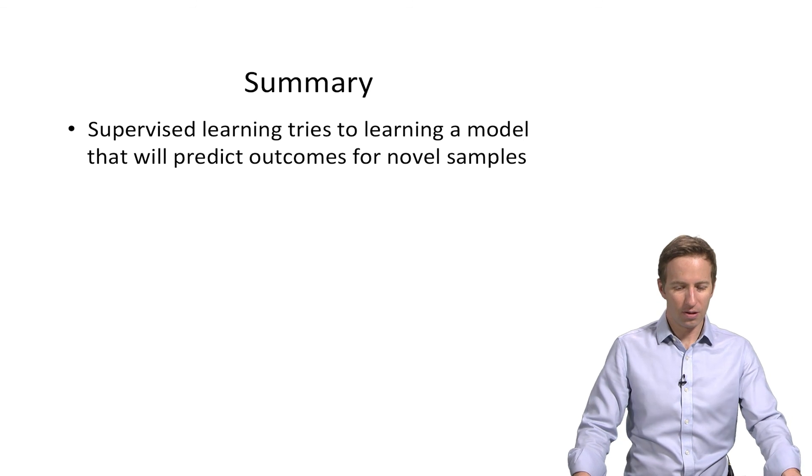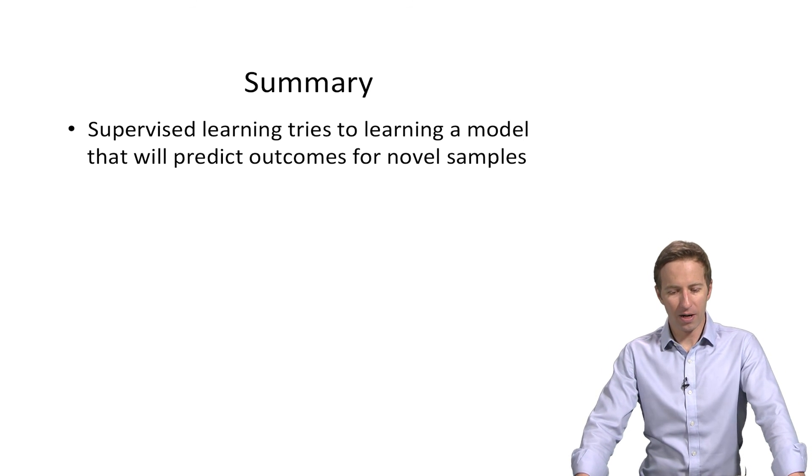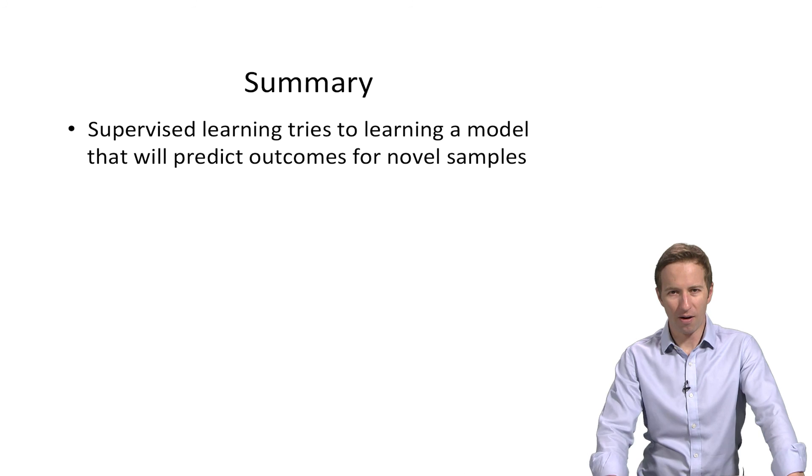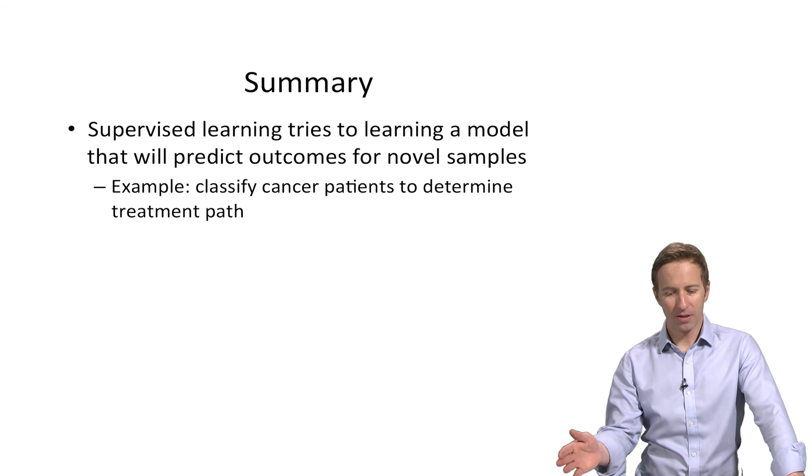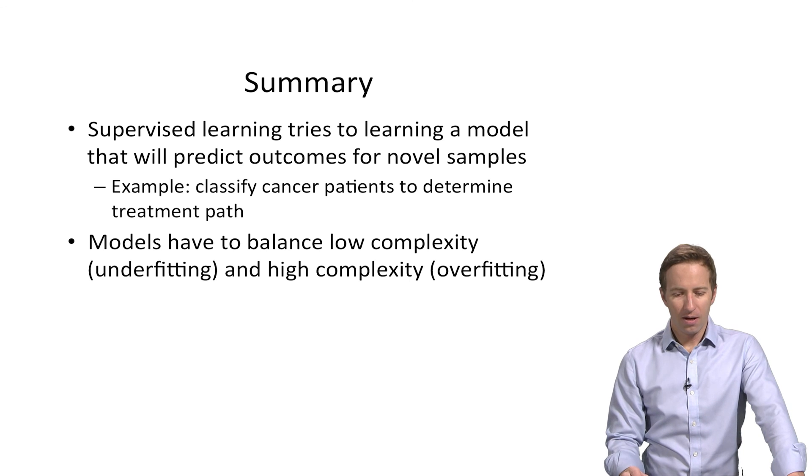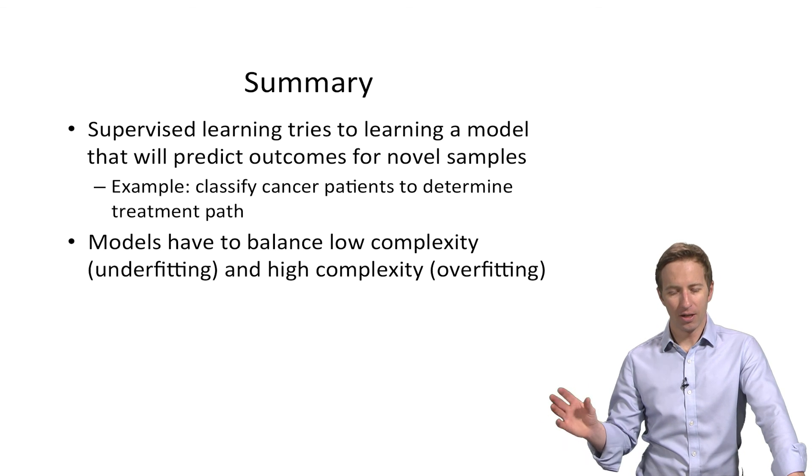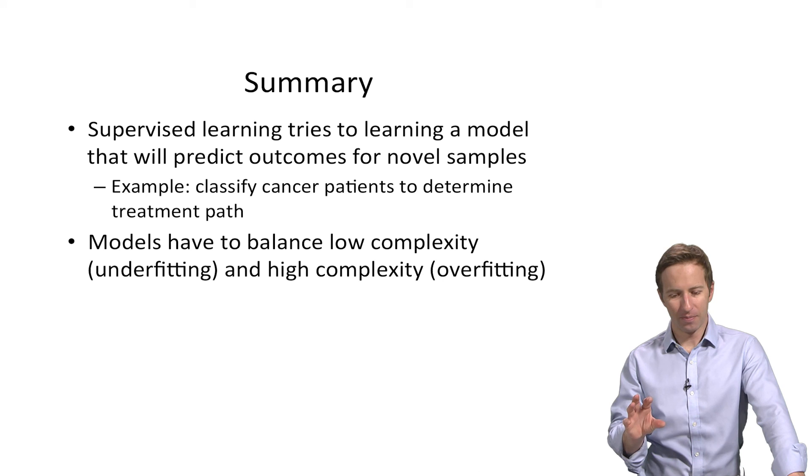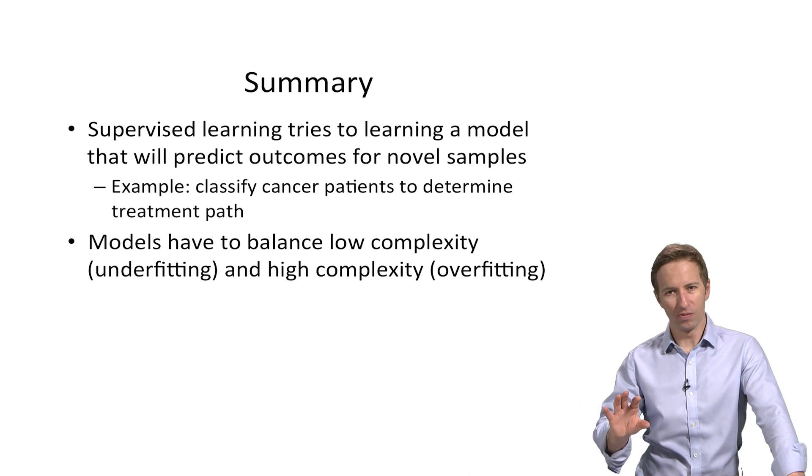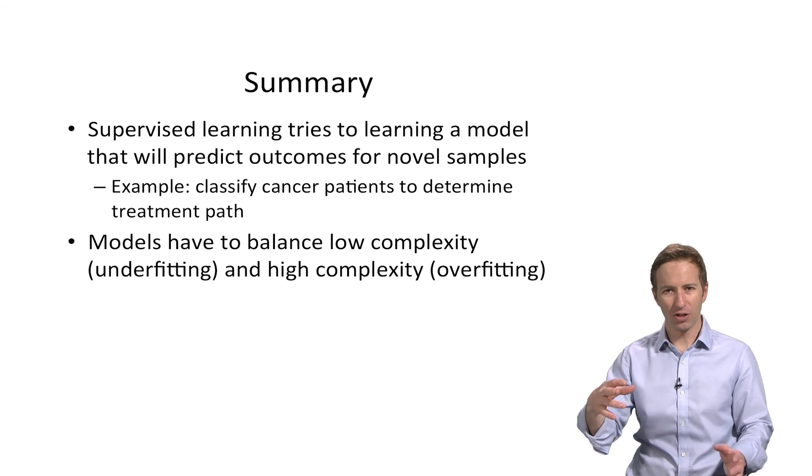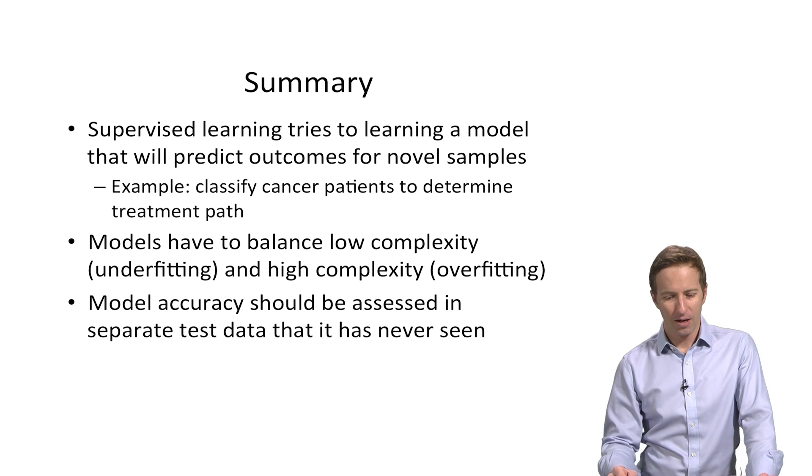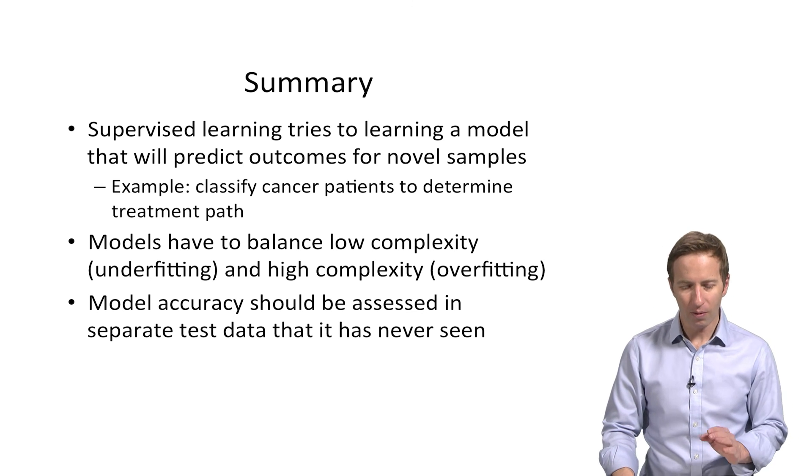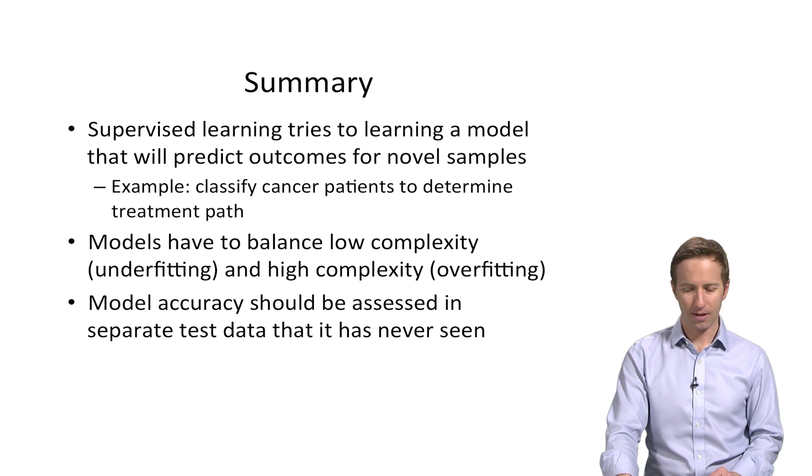So in summary, supervised learning is trying to learn a model that will predict outcomes for novel samples. One example would be to classify cancer patients before they begin treatment to determine which treatment path to give them. Models generally have to balance low complexity and high complexity, to avoid either underfitting or overfitting. So they want to kind of find a sweet spot where they have just enough flexibility to capture the relevant variation in the training data.